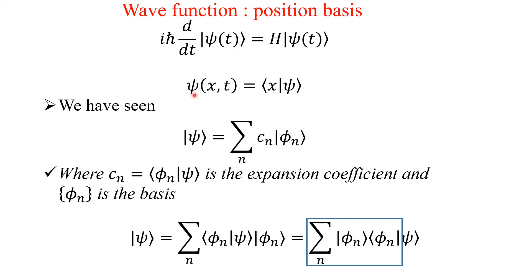The wave function ψ(x) can be represented as the inner product ⟨x|ψ⟩. The real meaning of this is: how much of each component x is projected over the total wave function |ψ⟩. Here, ⟨x| is represented as a bra vector and |ψ⟩ is the ket vector.